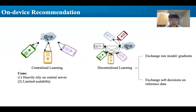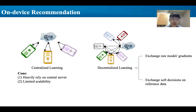Decentralized learning facilitates direct knowledge sharing between users. The cloud server only assigns neighbors to users rather than aggregating the models. There are two ways to exchange knowledge: one is directly sharing raw data, such as model parameters or gradients. A more privacy-preserving way is exchanging users' soft decisions on the reference data, minimizing the risks to sensitive information.